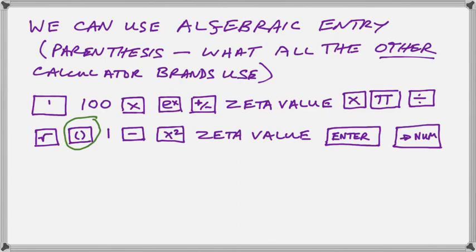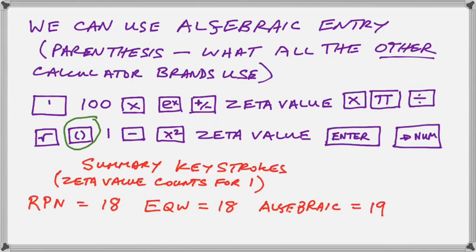Okay. So how do these various three entry methods stack up? Well, just counting what I have written there, we have an equal tie on the RPN and the equation writer and we only have one more keystroke for the algebraic. So that's a summary of the keystrokes.